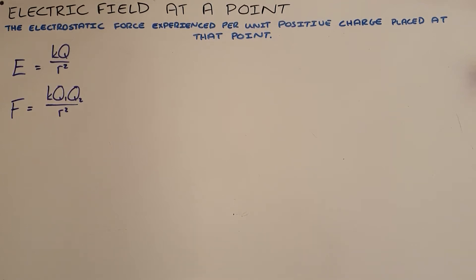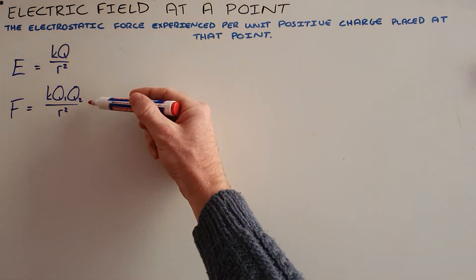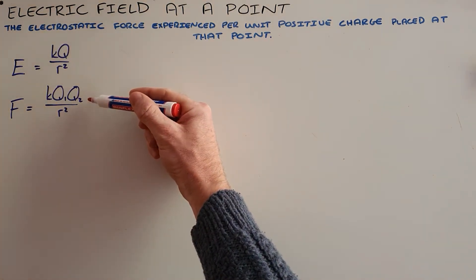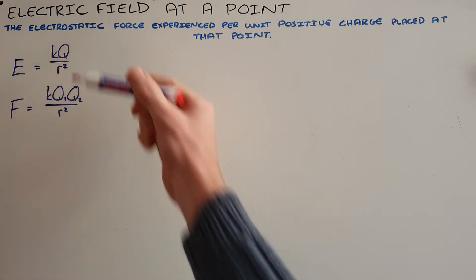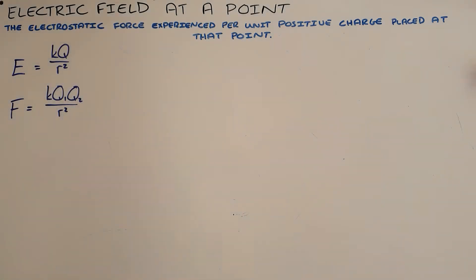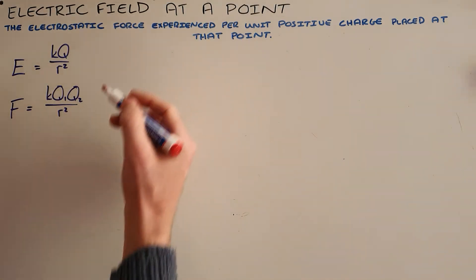The electric field at a point is the electrostatic force experienced per unit positive charge placed at that point. The formula for electric field at a point can be derived from a combination of Coulomb's law and our original electric field formula.